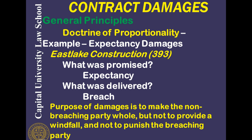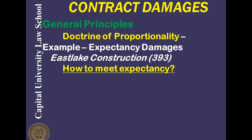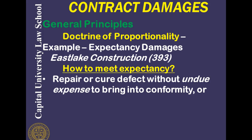The purpose of damages is to make the non-breaching party whole, but not to provide a windfall and not to punish the breaching party. How do we meet this expectancy? Normally, the expectancy would be met when the condominium is built to requirements. When it is not, one way to meet the expectancy is to repair or cure the defect without undue expense to bring it into conformity — for example, putting in missing wires, installing floors correctly, fixing cabinets, or correcting lighting.